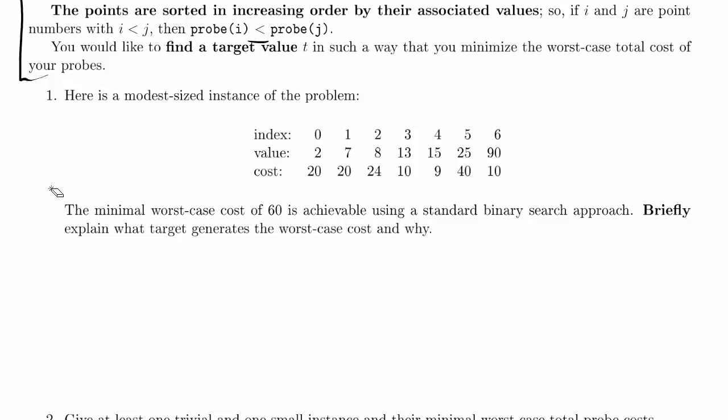We're working on problem 4.1 from the Computer Science 320, 2014 Winter II practice final exam. Problem 4.1 gives us a particular instance of finding a target value in an array of points where we can probe the points to find out their values. We don't have access to the values beforehand, but we do have access to the cost, and the cost of probing one point.